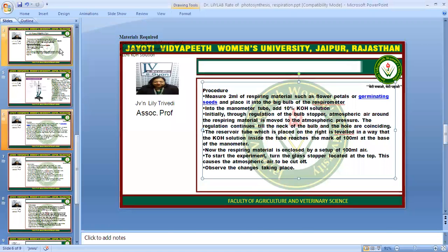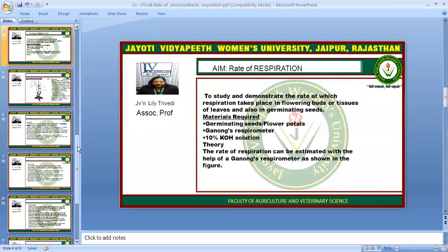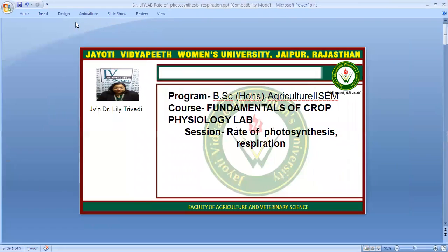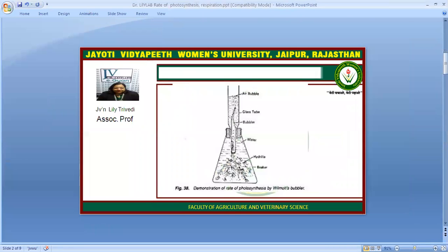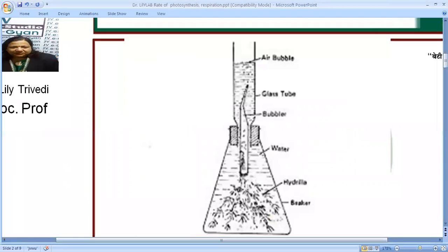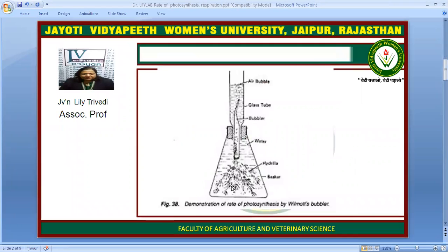Let's start with the first slide: Measurement of Photosynthesis. To measure photosynthesis we have an instrument called a Wilmot's Bubbler. This consists of a test tube containing a plant placed in an inverted tube. The principle is that when photosynthesis occurs, the plant will release oxygen, and that oxygen will go out in the form of bubbles. These bubbles can be counted, or the space created can be measured.